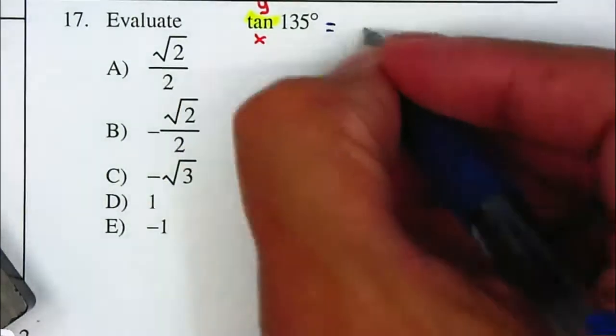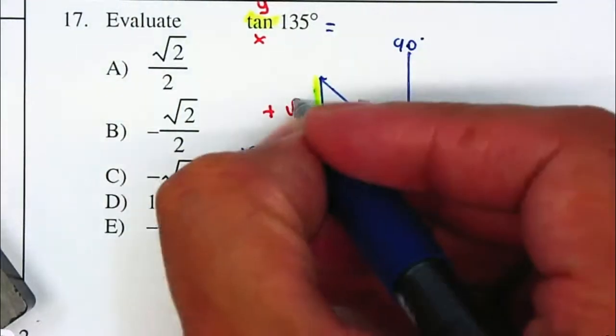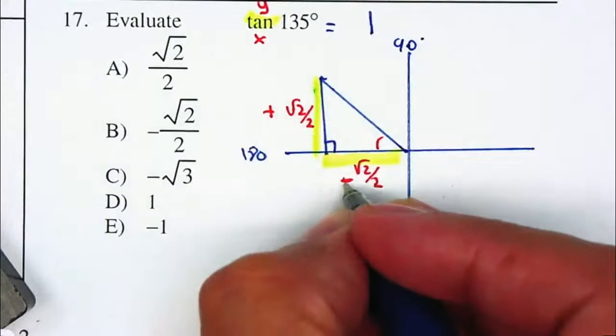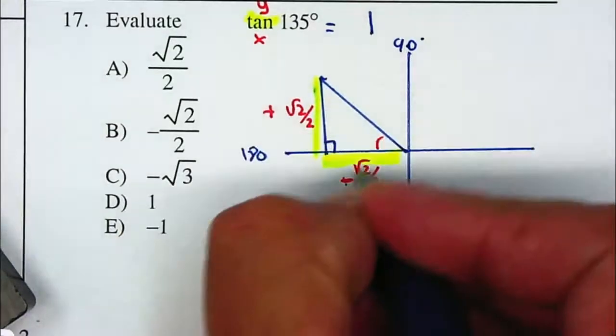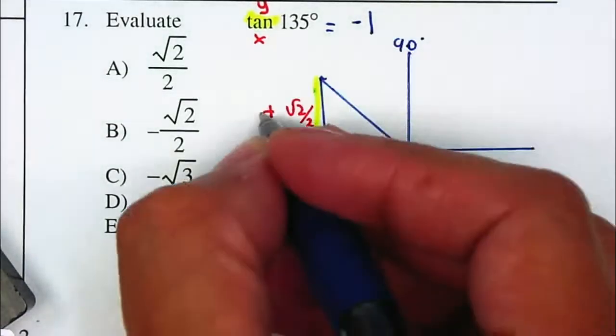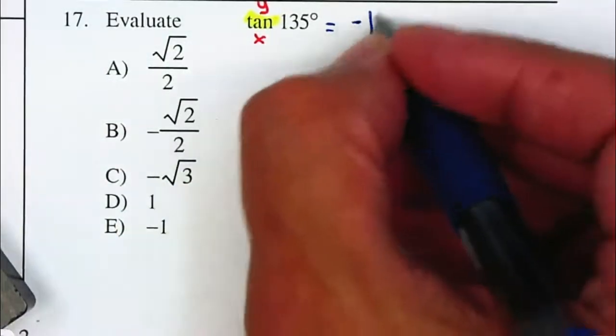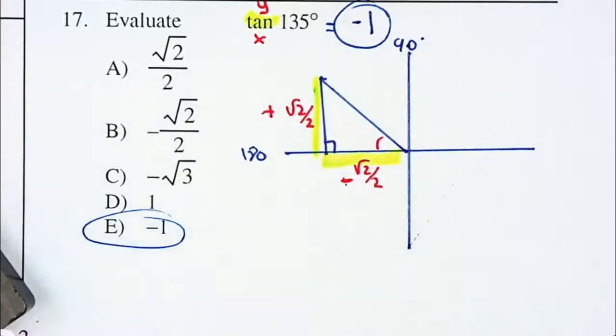Because they're equal to each other I know it's going to be square root of 2 over 2 divided by square root of 2 over 2 which will be 1. Positive divided by negative will be negative, so your answer will be negative 1 which is the letter E.